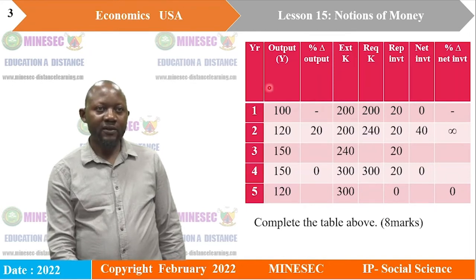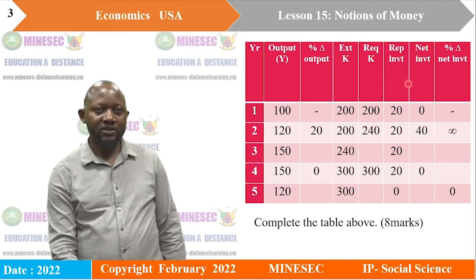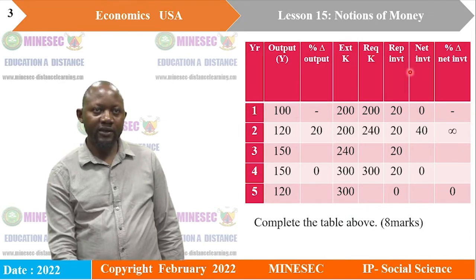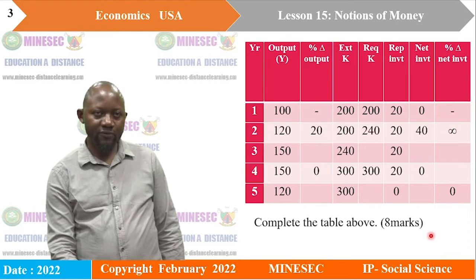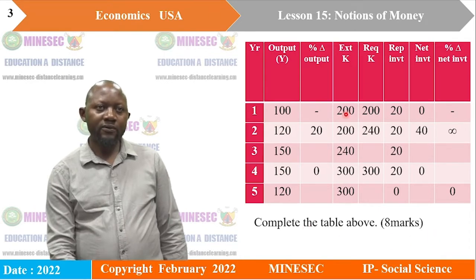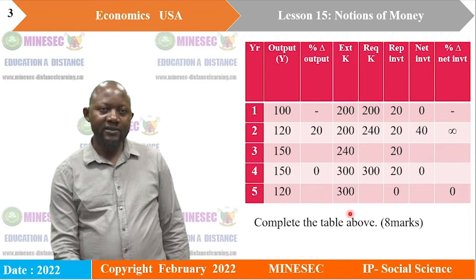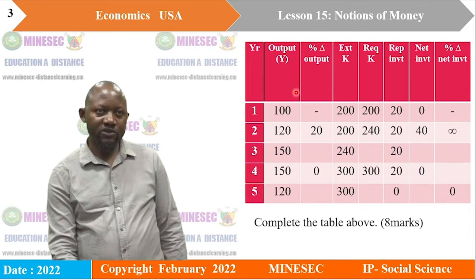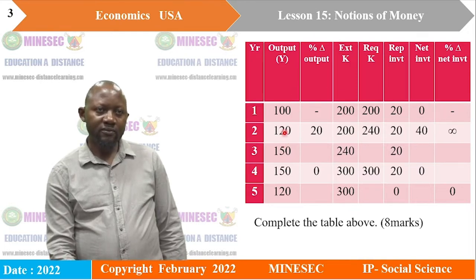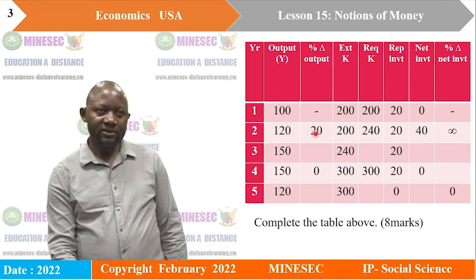We have column 3 and column 8 that are in percentages. All the other columns are in millions of francs CFA. So you are expected to complete the table above. In our last session, you were told how to determine the percentage change in output: you take the new output, minus the old, divided by the old, times 100.